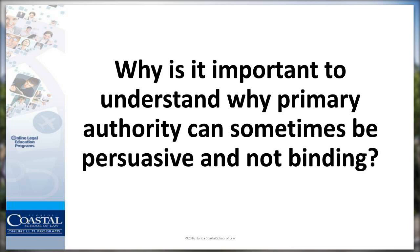On a political note, decisions from some conservative circuits might not be well received in some liberal circuits, and vice versa. For example, the Fourth and the Ninth Circuit might not give much weight to each other's decisions. If you can find a relevant primary source—either mandatory or persuasive—it's generally not a good idea to cite secondary sources. However, if there's no primary authority on the subject, that would be the time to use those secondary sources.